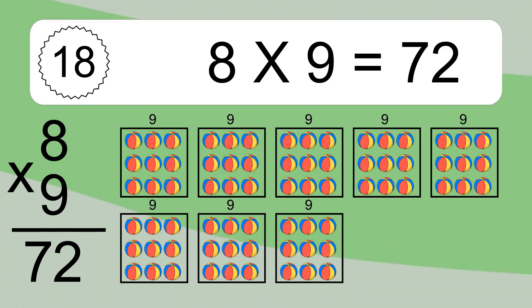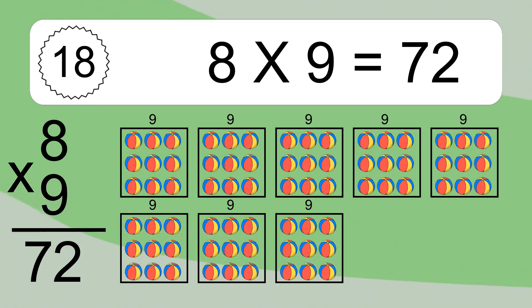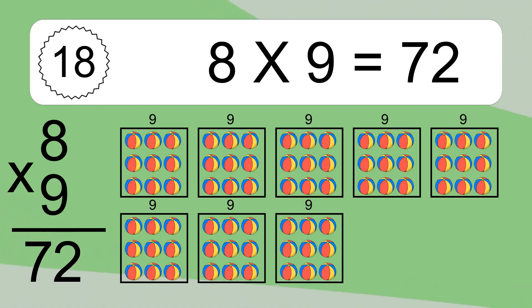We have 8 boxes, and each box has 9 colorful balls inside. If you count all the balls in all the boxes together, you will have 8 times 9 balls. This equals 72 balls.